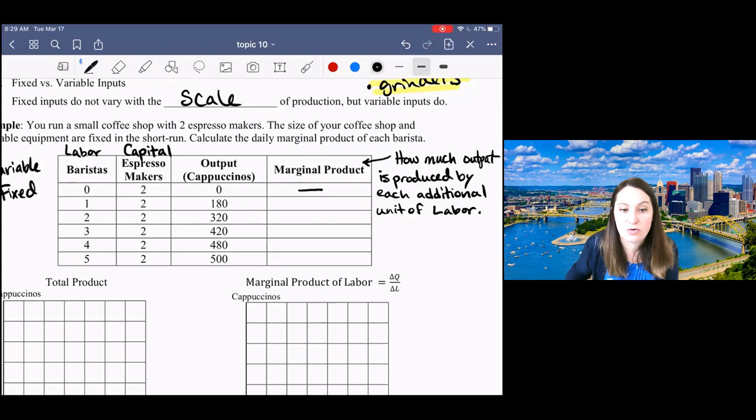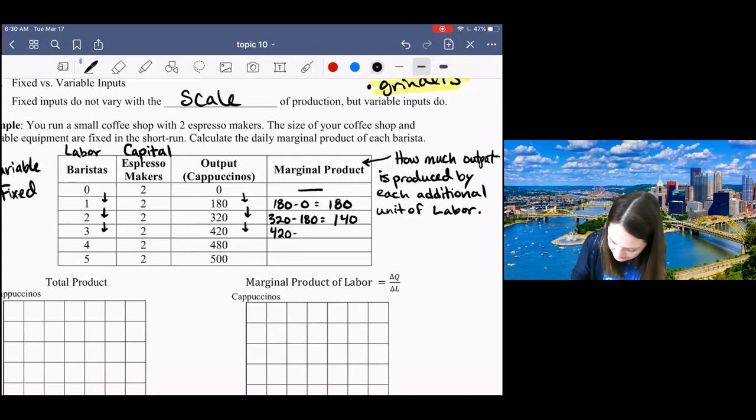If I have zero workers, I can't really calculate marginal product. So I'm going to start by thinking about the marginal product of the first worker. As I hire the first worker, I go from zero to one workers, my output is increasing from zero to 180, and so the marginal product of the first worker is 180. If I hire the second worker, my output increases from 180 to 320, which gives me a marginal product of 140.